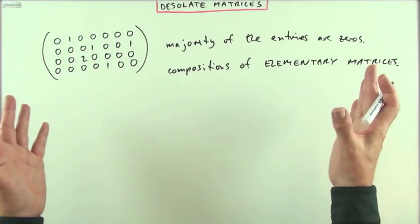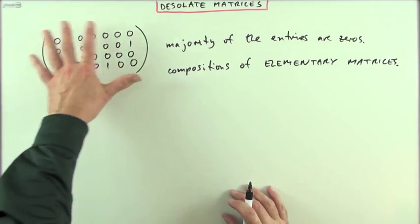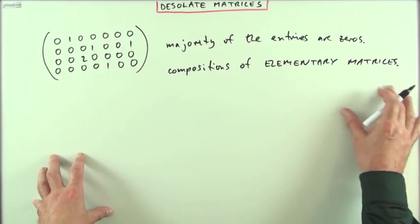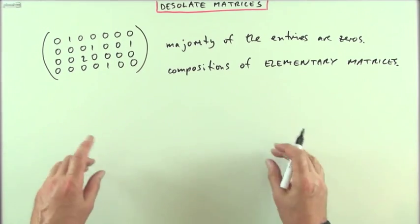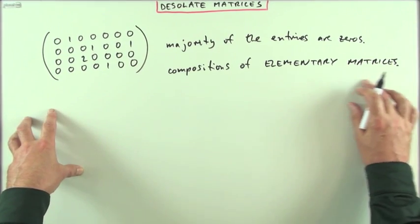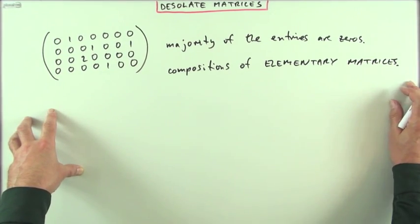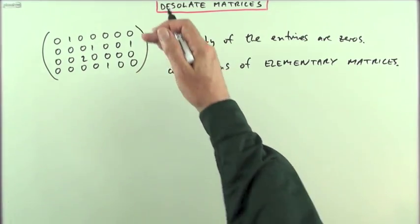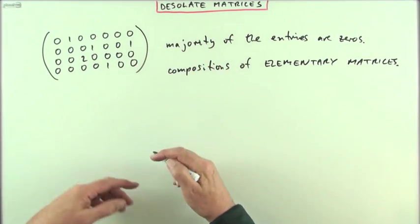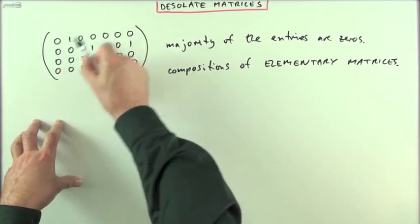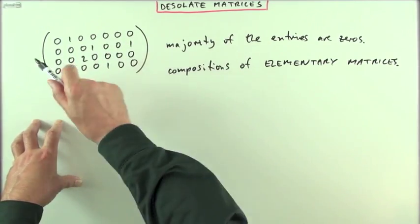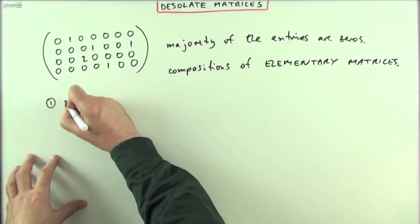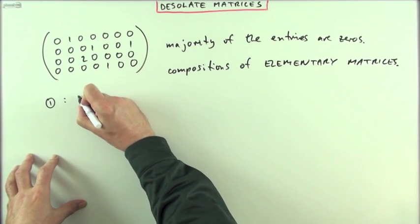You could consider any matrix, even if it was jam-packed full of numbers, to be a composition of elementary matrices, but it wouldn't serve any purpose in that case because it would be just as cumbersome adding combinations of all the rows as it would be to find the individual entries using the row times the column. First, consider the case of pre-multiplication.